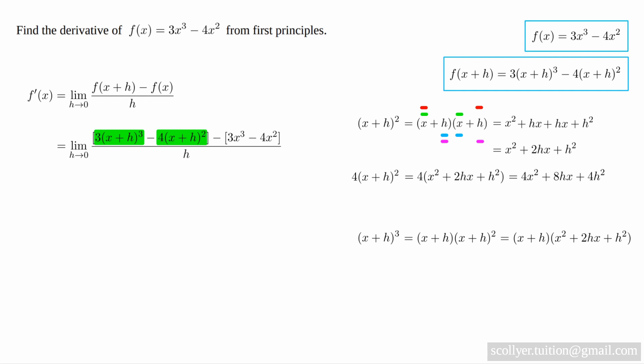Now we expand these brackets and bring together like terms to obtain x cubed plus 3hx squared plus 3h squared x plus h cubed. So, 3x plus h all cubed becomes 3 times that expression, which gives us 3x cubed plus 9hx squared plus 9h squared x plus 3h cubed.